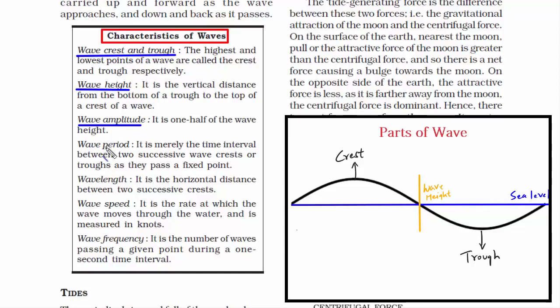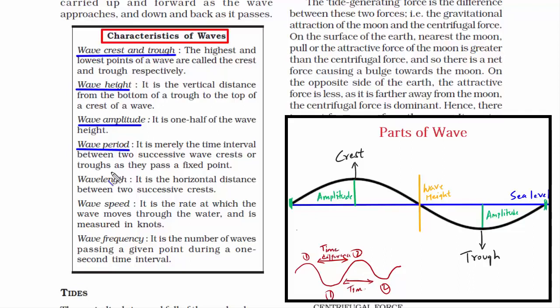The third characteristic is wave amplitude — it is one half of the wave height. From one complete cycle of a wave, the amplitude is the height between sea level and the crest, but it is also the depth between sea level and the trough. So wave amplitude is both upward and downward. The fourth is wave period — the time interval between two successive wave crests or troughs as they pass a fixed point. In simple words, it is the time a wave takes to form the next crest or trough.